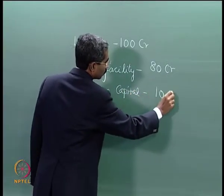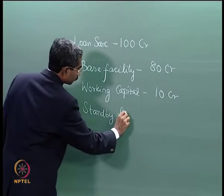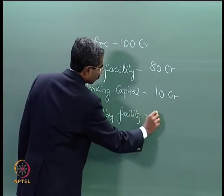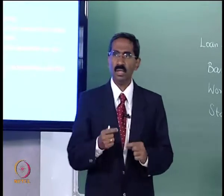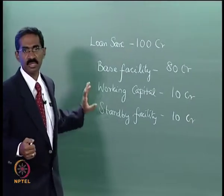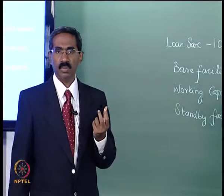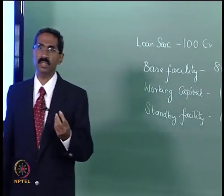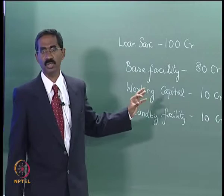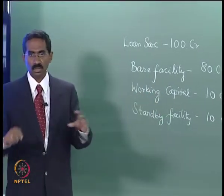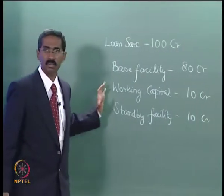There could also be what is called a standby facility. When we look at the different types of facilities, there are different conditions attached to each — for example, when we can use the facility, the kind of interest rates, and what covenants need to be followed. So though the entire loan value is 100 crores, it is further split into different types of facilities.